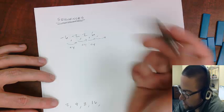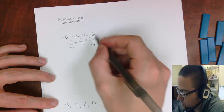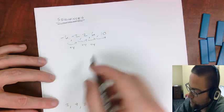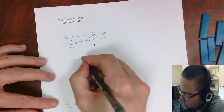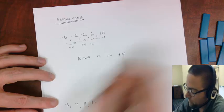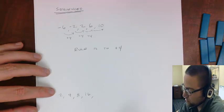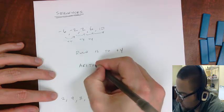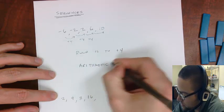So you assume that this pattern will continue in this way. So what's 6 plus 4 is 10. So this one, the rule, is to add 4.